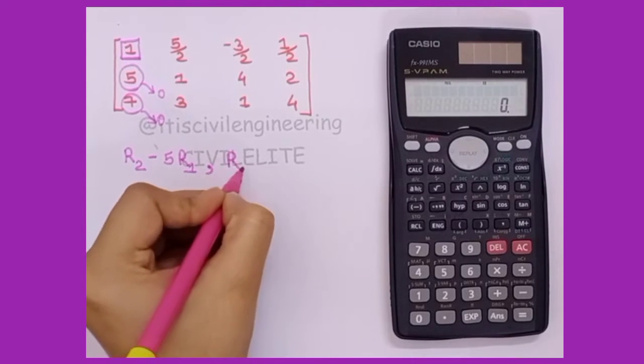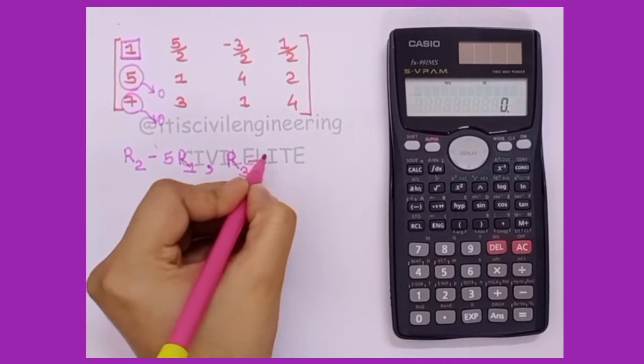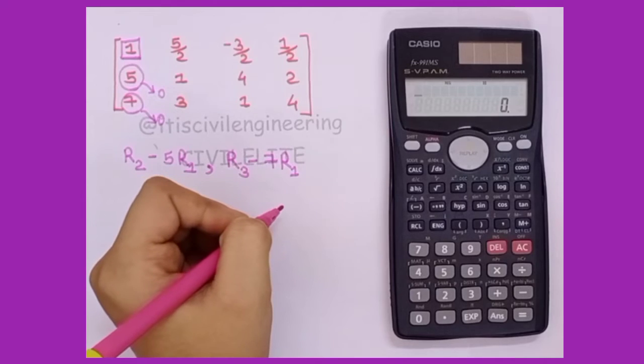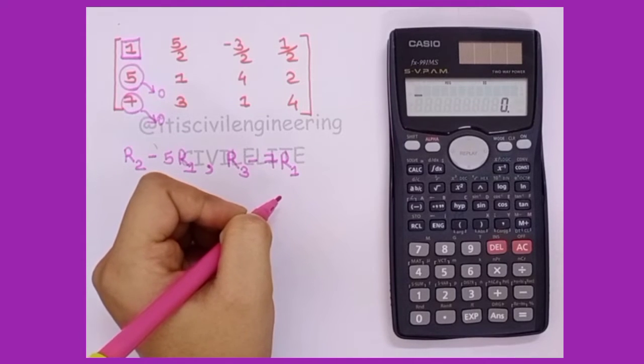Same way, multiplying 1 with 7 it will be 7, and 7 minus 7 will be 0. So the other row transformation we will perform is r3 minus 7r1.